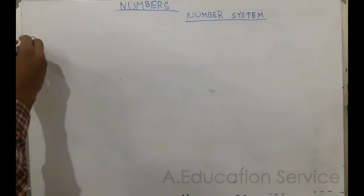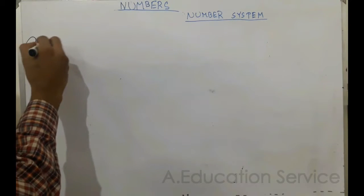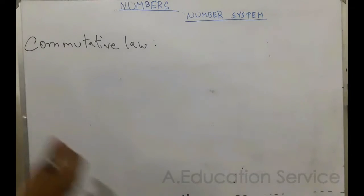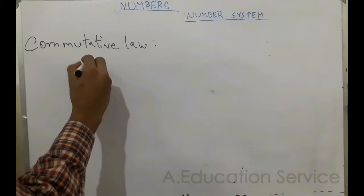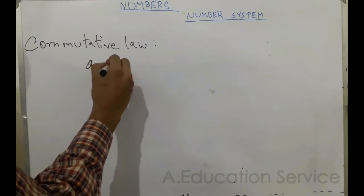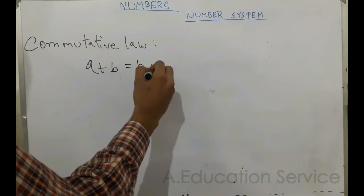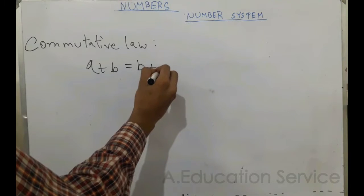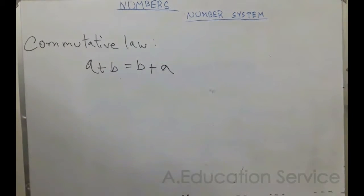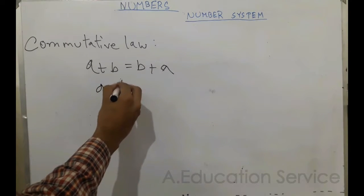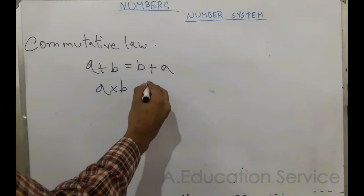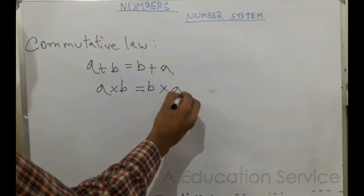Now let's start with the commutative law. For any two numbers a and b: a plus b equals b plus a, and a times b equals b times a.